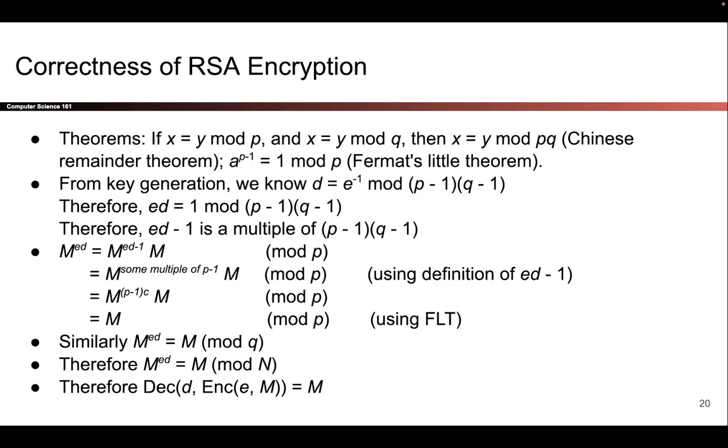But what's great about this rewriting is I have this term ed-1 here, and in the fact that I showed earlier, I also have ed-1. That's great. So instead of writing ed-1, I can use the fact that I came up with earlier and say that actually ed-1 is just some multiple of p-1. Note that if anything is a multiple of (p-1)(q-1), it must also be a multiple of p-1. So I have just written that instead of ed-1, that is just some multiple of p-1.